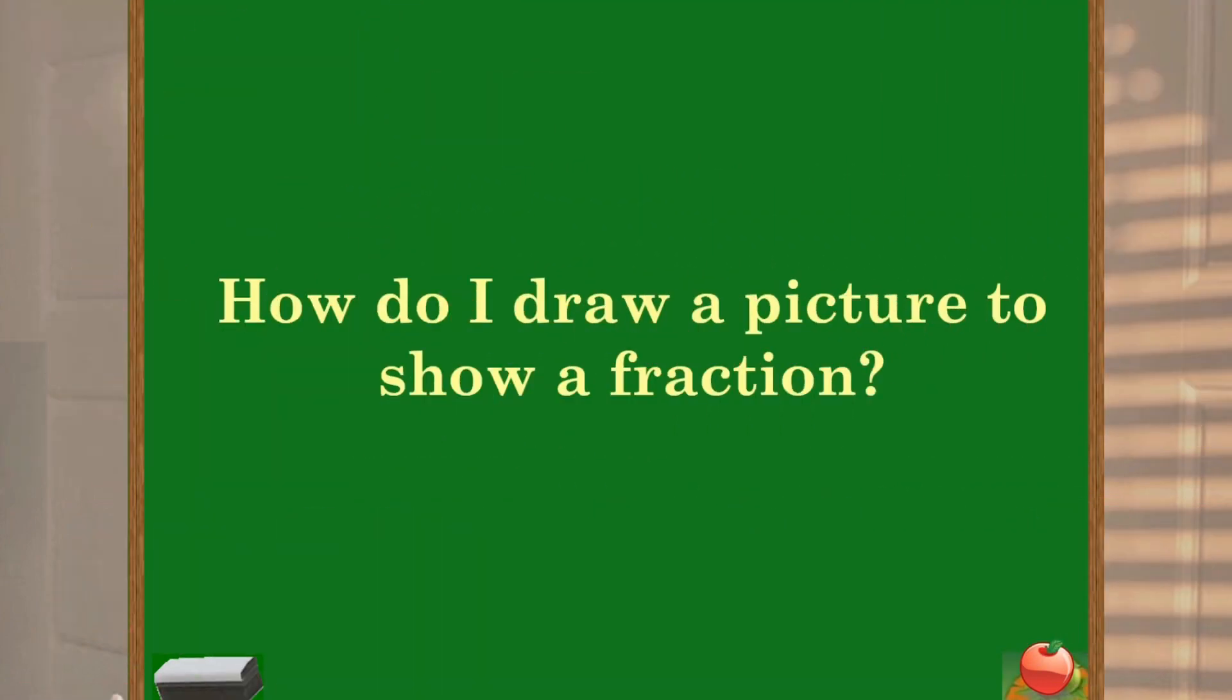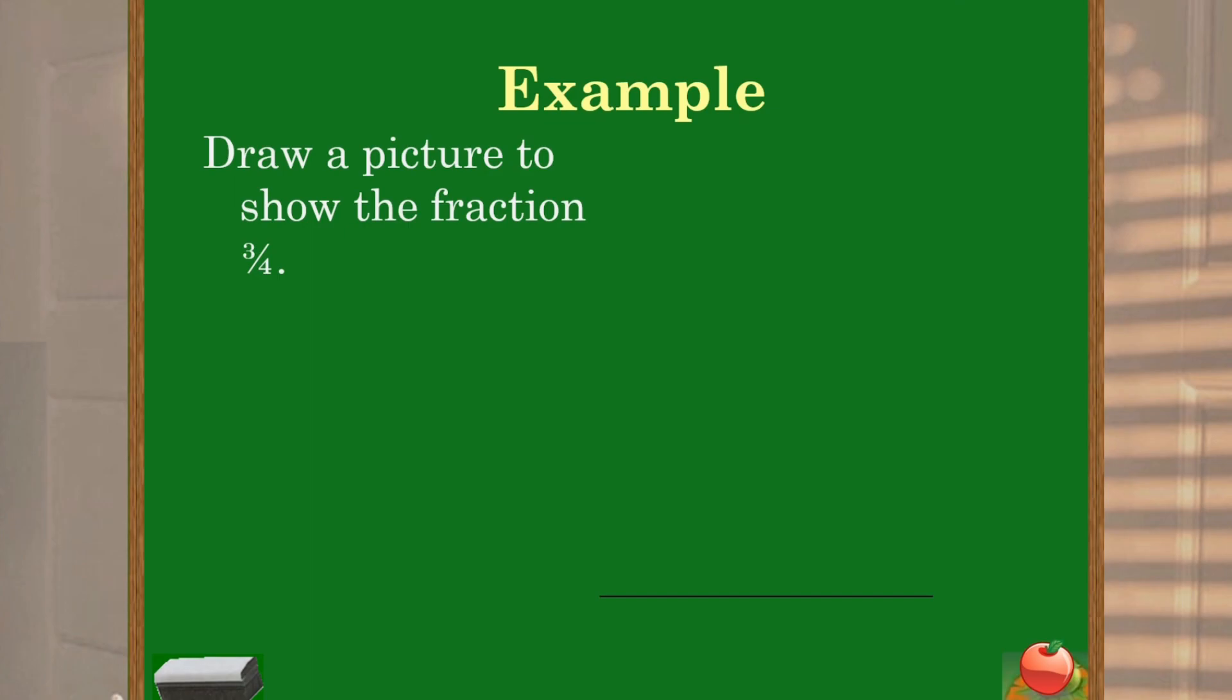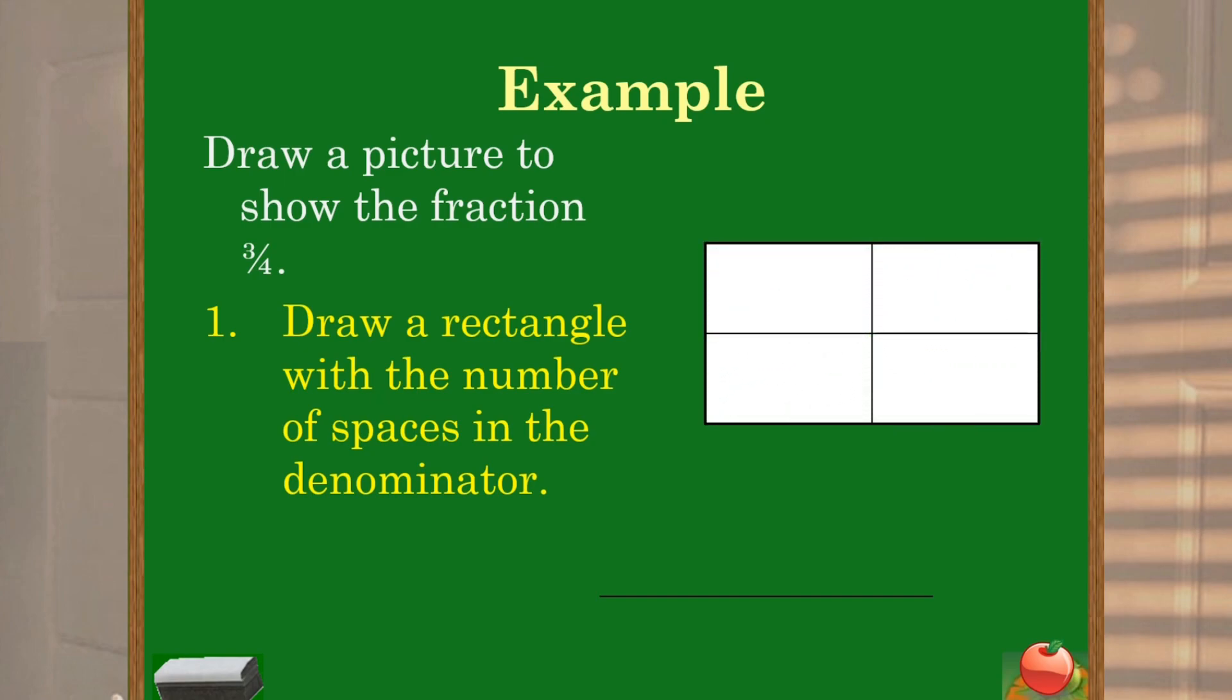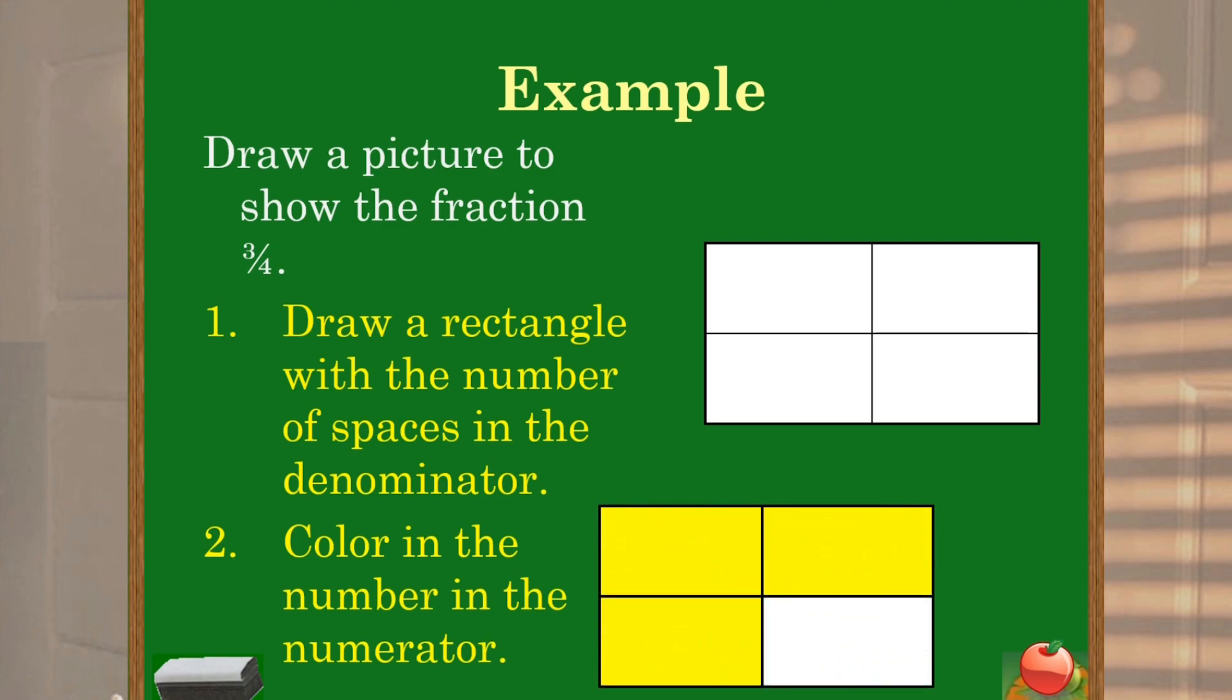Well, now let's see how to draw a picture to show a fraction. So now we need to show a fraction three fourths visually. So we'll draw a rectangle with the number of spaces shown as the denominator part. That is the total number of parts in the denominator. And the shaded number of parts will be the numerator one. That is we need to color in the number which is there in the numerator. So we have four equal parts and we are going to shade yellow that is three parts.